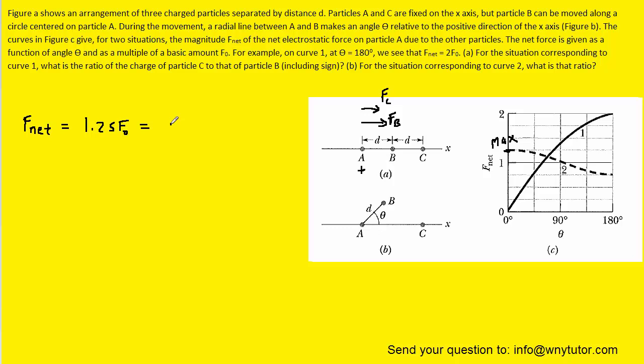We can take the net force and set that equal to FB plus FC, and we're going to fill in the respective Coulomb's Law expressions. Since the forces are pointing to the right, they must be attractive forces. In other words, charge B is attracting charge A towards it, and so is charge C. That means their signs must both be negative.